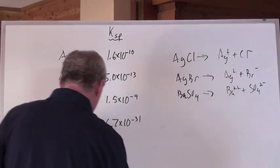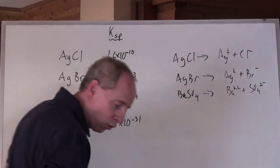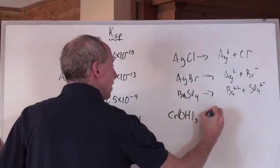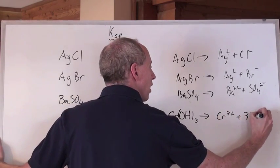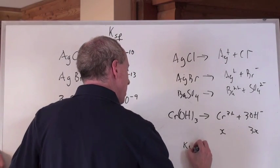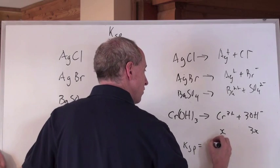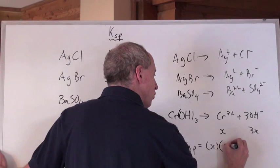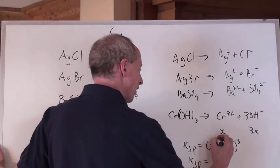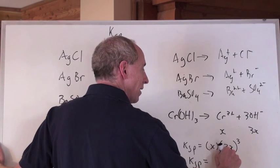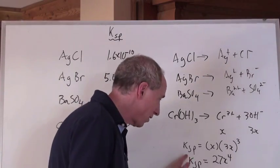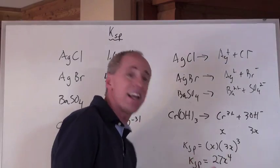Here's the deal with the last compound. Of these four, which is the most soluble? Consider Cr(OH)₃ — it dissociates into chromium ions and three hydroxide ions, giving X of Cr³⁺ but 3X of OH⁻. The KSP expression becomes KSP = [Cr³⁺][OH⁻]³ = X · (3X)³ = 27X⁴. So to find X, you divide the KSP by 27 and take the fourth root.